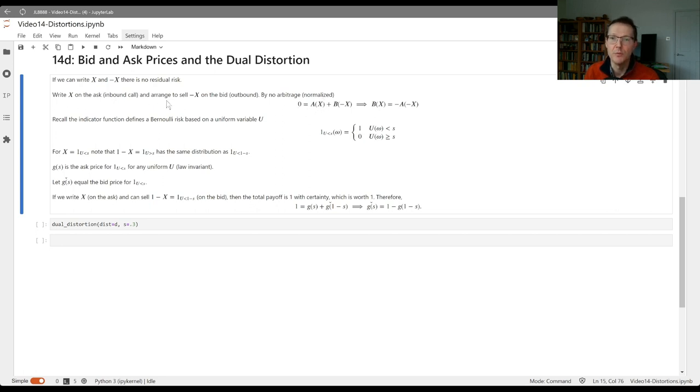then the proceeds from those two transactions has to be zero. And so the proceeds are going to be the ask on x plus the bid on minus x. That has to add up to zero. And therefore, if we just swap the meaning x for minus x, we get this expression for the bid on a contract x is equal to minus the ask on minus x. Now, that's a bit of a brain teaser. And I prefer to think of it in terms of the weather derivative way with the 1. It kind of makes it simpler that everything's positive. But this is a fundamental relationship that holds between bid and ask prices.